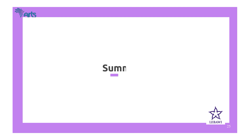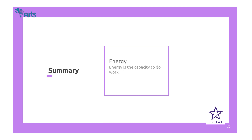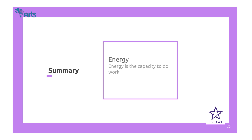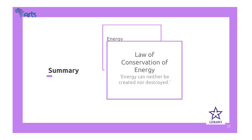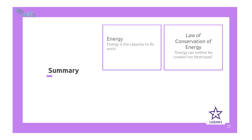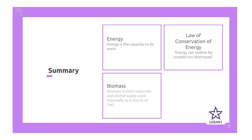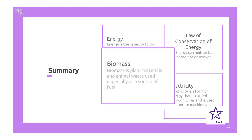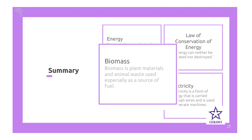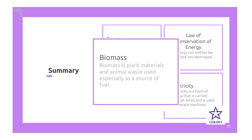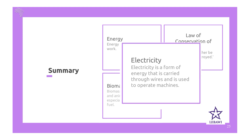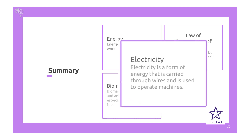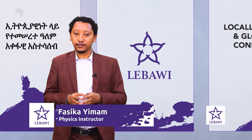Let's recap what we have learned. Energy is the capacity or ability to do work. The law of conservation of energy states that energy can neither be created nor destroyed. We have two energy resources: biomass — plant materials and animal waste used as a source of fuel — and electricity, generated from hydroelectric stations to operate machines. And that's all for today. Thank you.